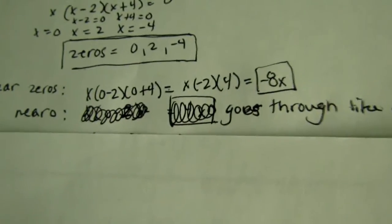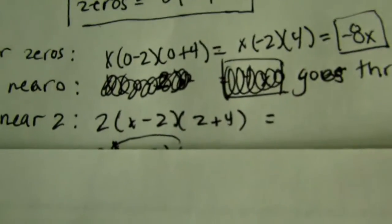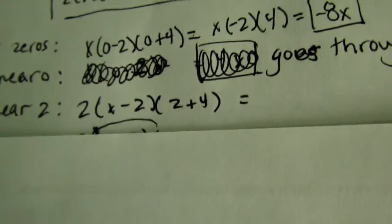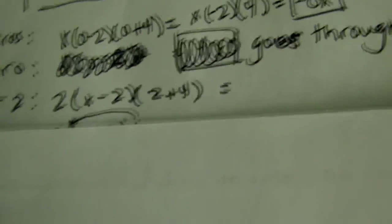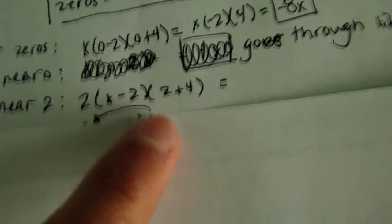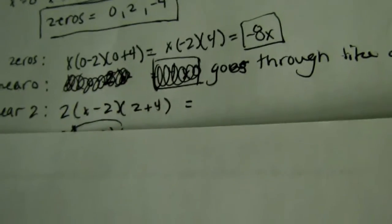For our next one, we want to find near 2. So, we put a 2 in for x, and then x minus 2, and then 2 plus 4. We don't have a 2 in for x right there, because 2 minus 2 would be zero, and that would break the rule.